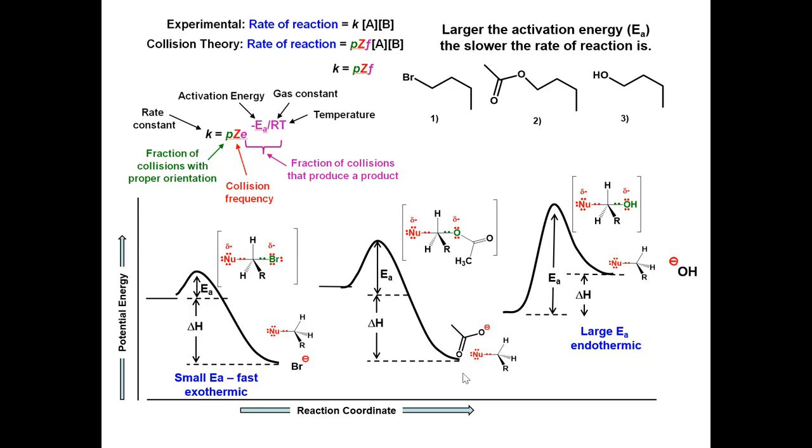The acetate ion is a weak base, but not nearly as weak as the bromide ion. This reaction would be slower than 1 but faster than 3.